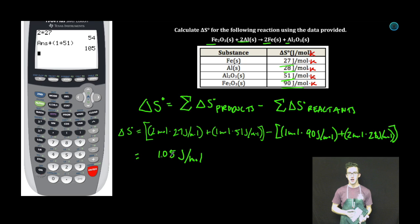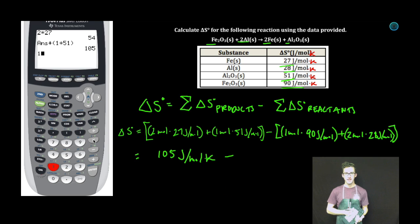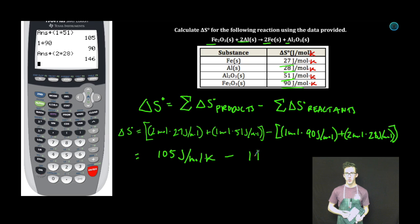The sum of the entropies of our products is 105 joules per mole Kelvin. Back to the calculator. 1 times 90, enter. Plus parentheses, 2 times 28, close parentheses. Sum of the entropies of our reactants: 146 joules per mole Kelvin.